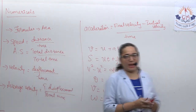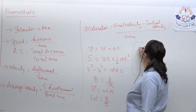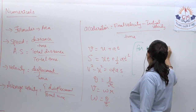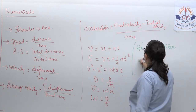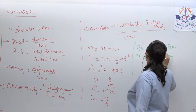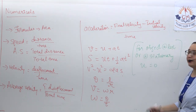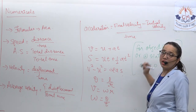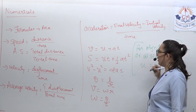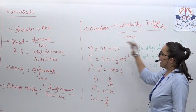One important thing to note: for an object at rest or stationary, you have to take u as 0. If it is mentioned that the object is at rest, then take initial velocity u as 0 in all three equations of motion. These are all the formulas.